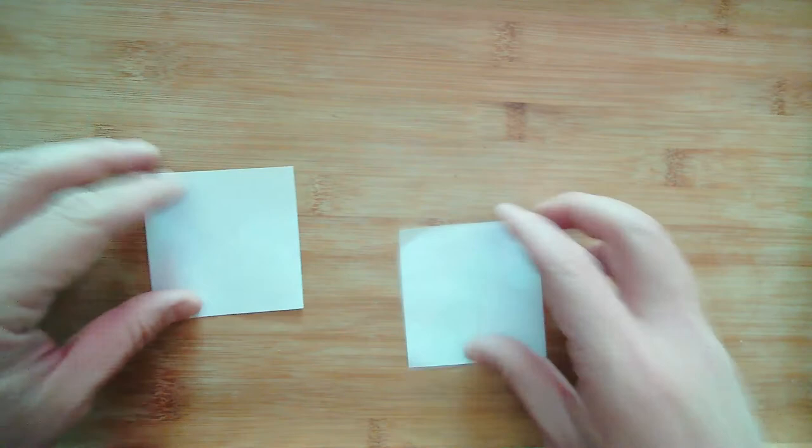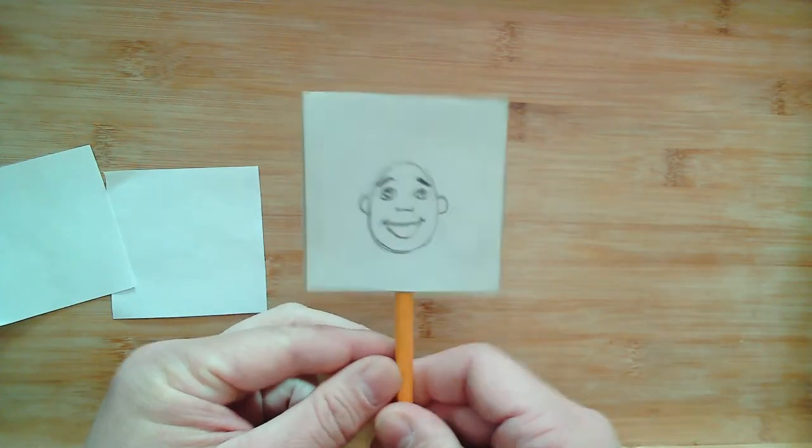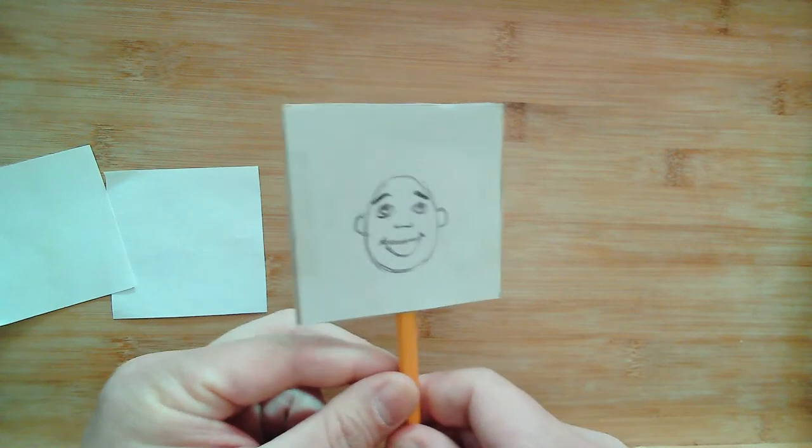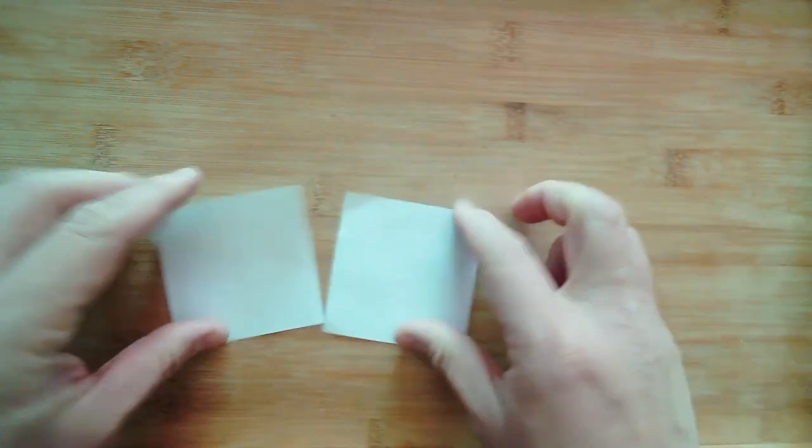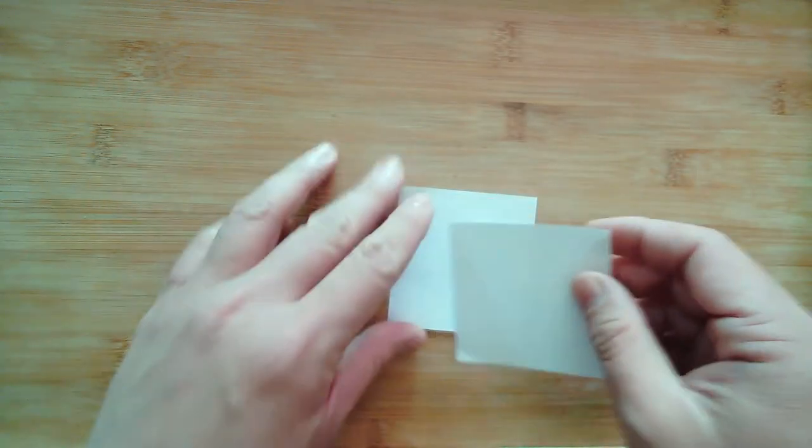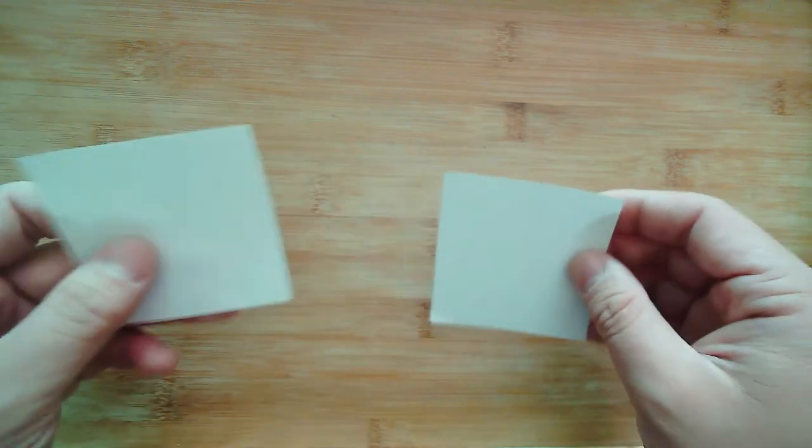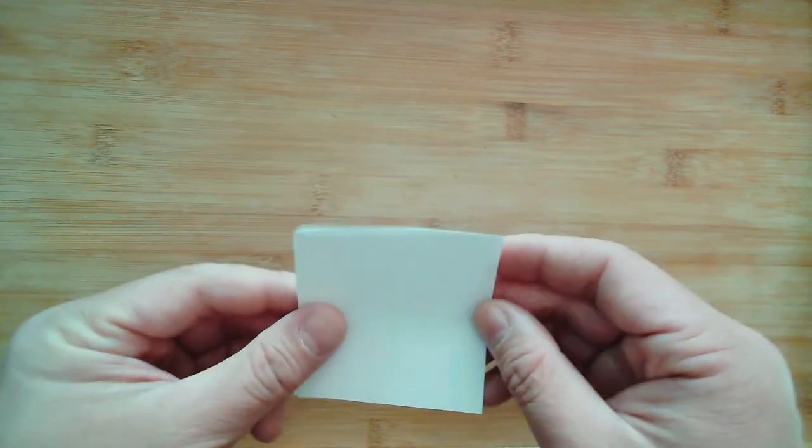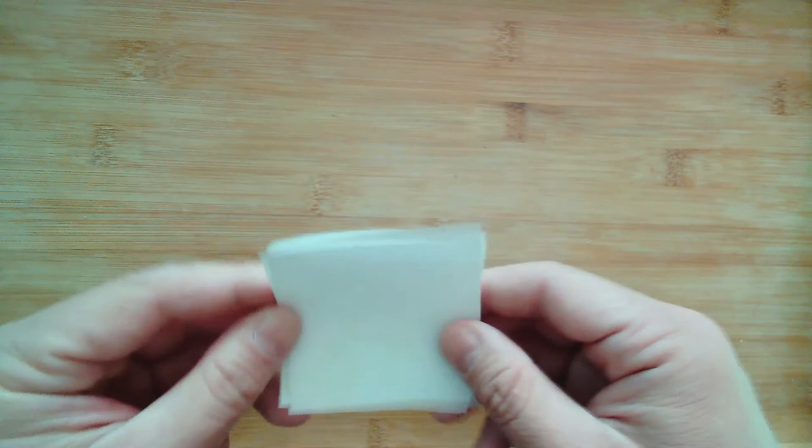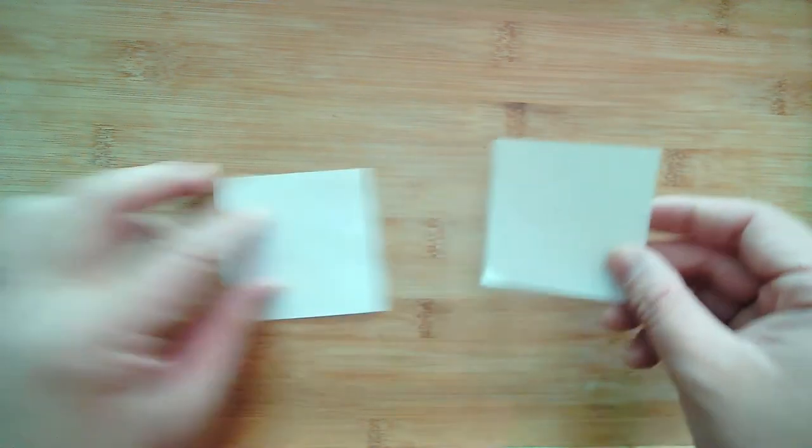So the Thaumatrope creates an optical illusion that essentially combines two different images into one. So you're going to want to think about two images that would work well combined, or you could think of a single image and think of a way to separate that image into two different images.